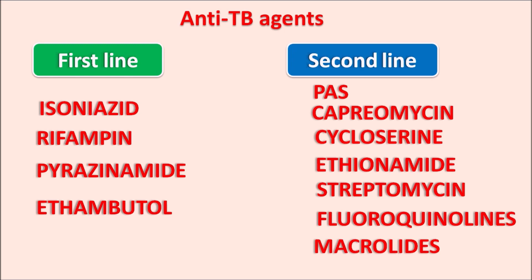These second line agents are used to control tuberculosis which is resistant to the first line agents. Sometimes resistant tuberculosis can also be treated by other drugs like linezolid and clofazimine. Clofazimine is an antilepral agent which can also be used to treat tuberculosis under resistant conditions.